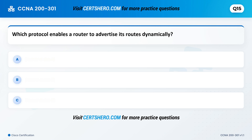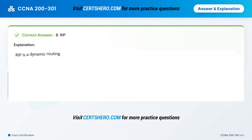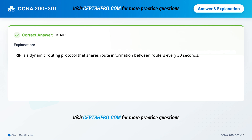Which protocol enables a router to advertise its routes dynamically? A. NAT. B. RIP. C. DHCP. Correct answer is B: RIP. RIP is a dynamic routing protocol that shares route information between routers every 30 seconds.